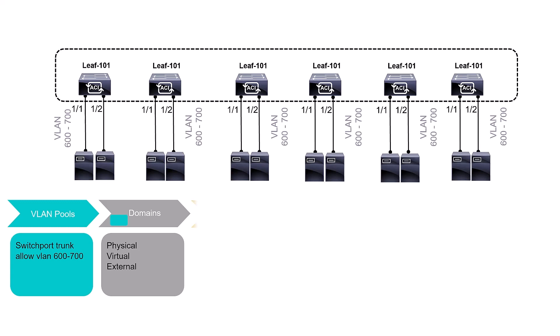Step three: configure something called an AEP — Attachable Entity Profile (also called Attachable Access Entity Profile). The AEP joins separate chunks of configuration together — think of it like an activation button. Similar to how an access control list doesn't take effect until you activate it under an interface, the AEP activates all the access policy configuration you're combining. Don't forget the AEP.